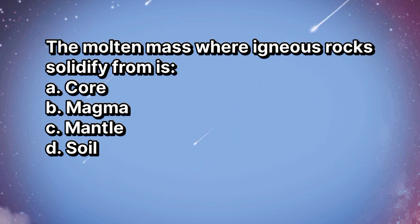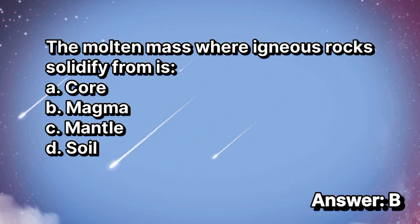The molten mass where igneous rocks solidify from is. A. Core. B. Magma. C. Mantle. D. Soil. The answer is letter B.